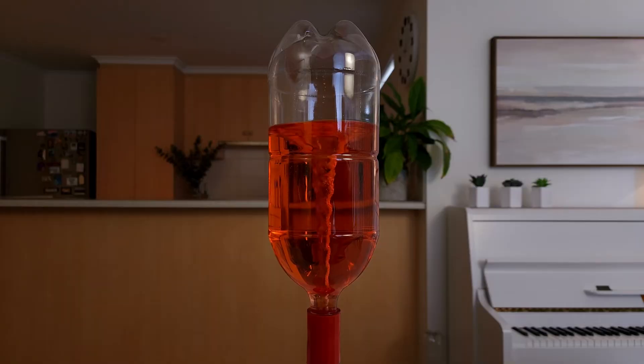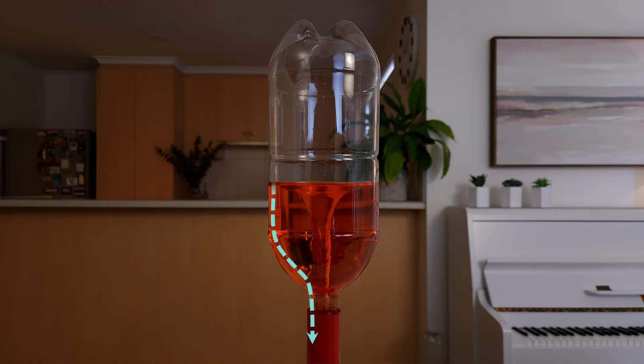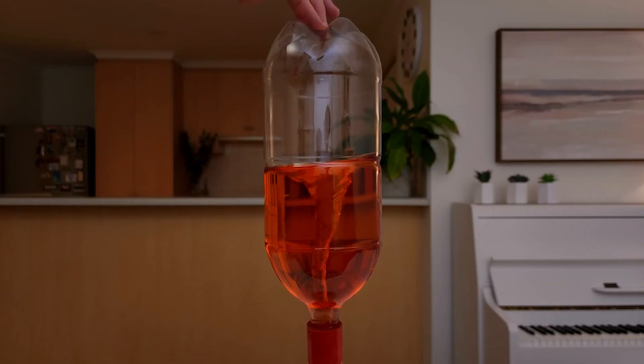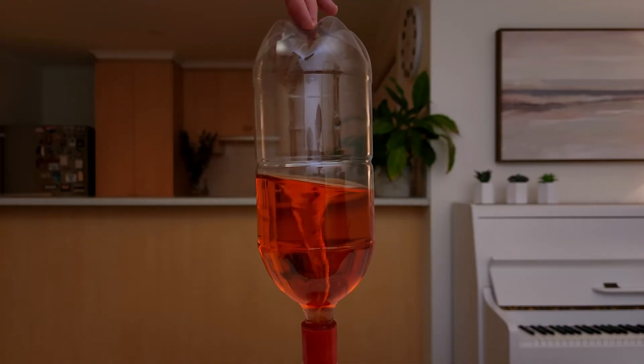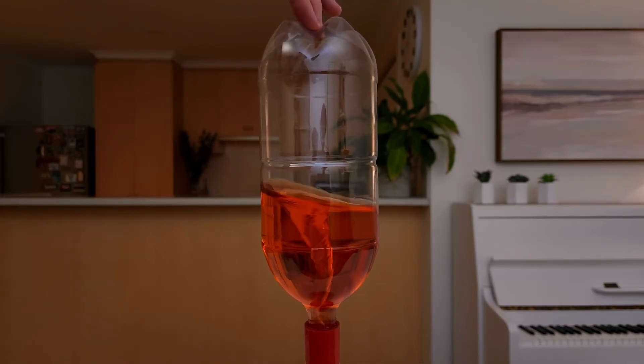The center of the vortex is kind of like a straw. It allows a steady flow of air to move up through the middle and a steady flow of water to move down along the sides. Also, check out what happens if you gently rock the bottle back and forth while the vortex is spinning. Whoa!